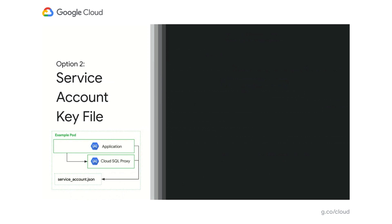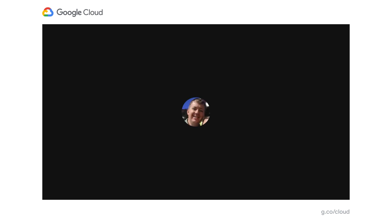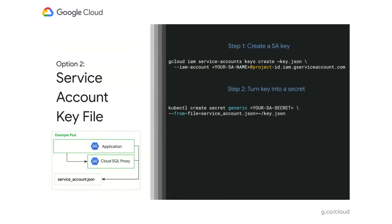The second option is the service account key file. Both the application and the proxy load credentials from a file and use that credential to generate tokens for API calls. Step one: create a service account key — use a gcloud command to create a local key.json file. Step two: turn the key into a secret using kubectl to create a generic secret, specifying the file name service-account.json loaded from key.json. Step three: mount it as a volume, which puts the file into your pod's filesystem so both the application and the proxy can read it and use it when making API calls.